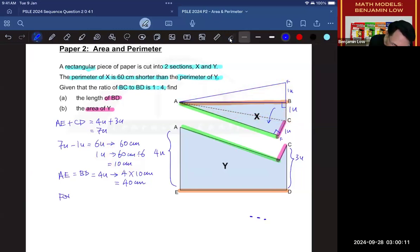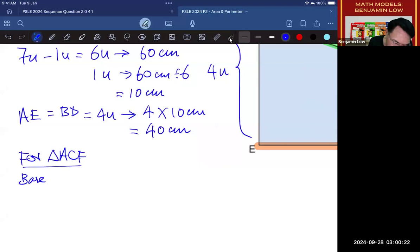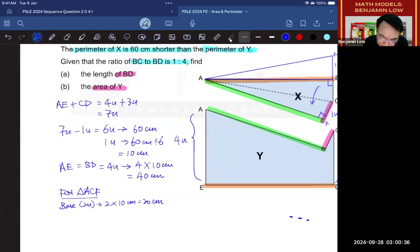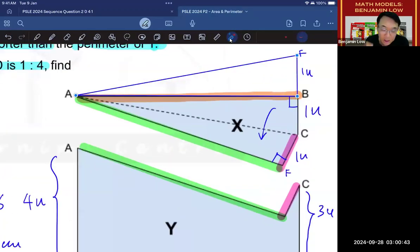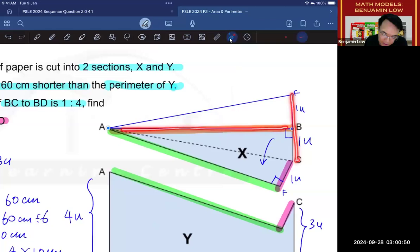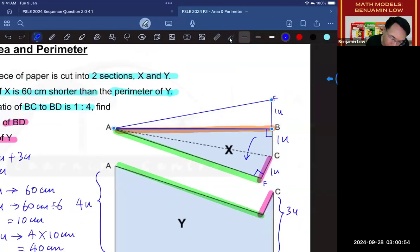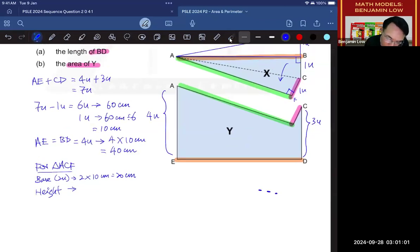I am going to call this shape triangle ACF. So for triangle ACF, I am going to write down all the dimensions. We know the base is made up of two units, which is 2 times 10, because again, one unit is 10. That will give me 20 cm. And then, what about the height? If this is the base, then this must be the height. And we can do that because this is a right angle, right? Remember, base and height needs to be perpendicular. So these two lines are perpendicular. This can be the height, and this can be the base.